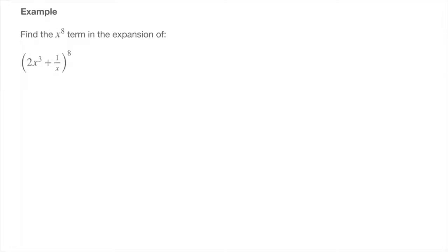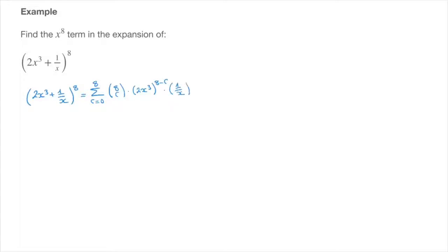The binomial expansion formula allows us to state that 2x cubed plus 1 over x, all raised to the power of 8, equals the sum from r equals 0 up to 8 of the binomial coefficient 8r times 2x to the power of 3, raised to the power of 8 minus r, times 1 over x raised to the power of r. I usually call this general term t_r, and I'll copy it below.